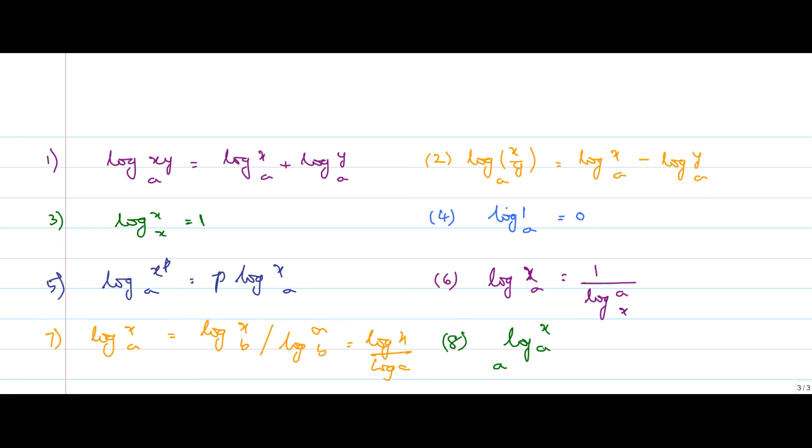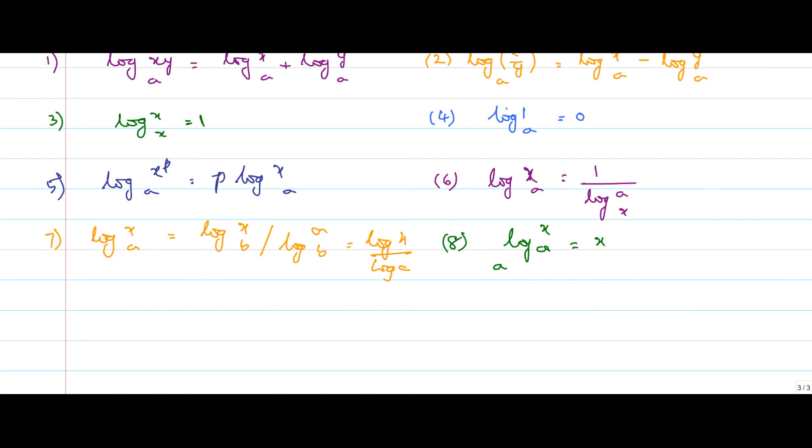And the eighth one is a power log x to base a is equal to x. The ninth one is x power log y to base a is equal to y power log x to base a. And the tenth one is log x power p to base a power q is equal to p by q log x to base a. These are some of the formulas that are very much important for operating logarithms.